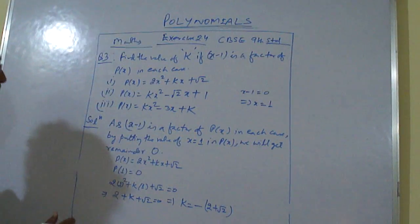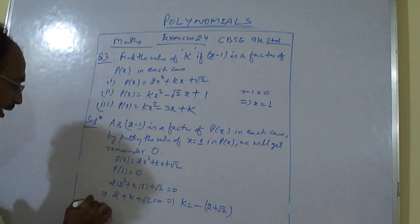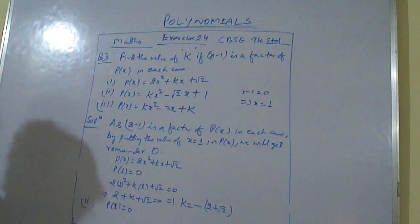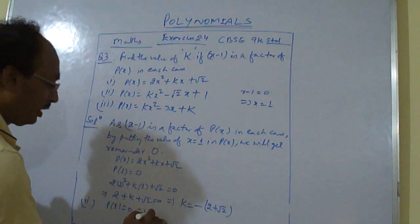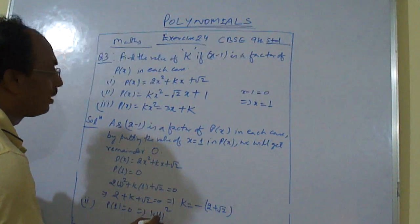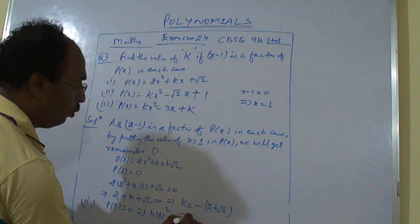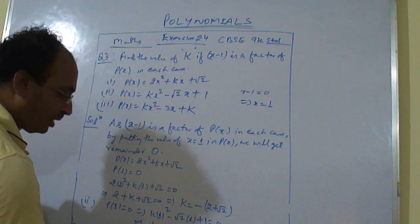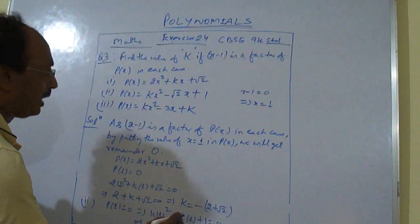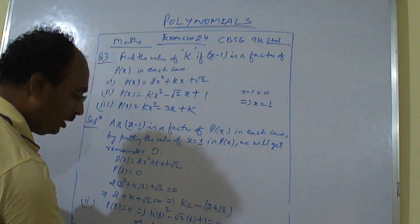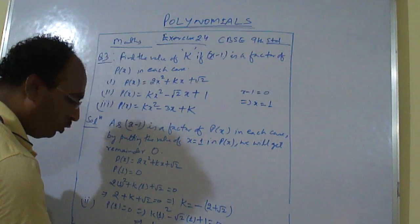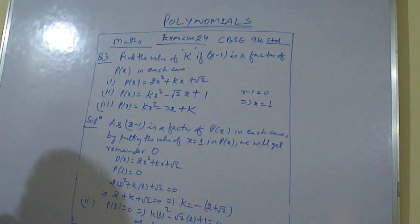Similarly, the second one we will solve. Again the second one is given p(1) is equal to 0. So p(1): k into 1 square minus root 2 into 1 plus 1 is equal to 0. This gives k plus 1 minus root 2 is equal to 0, which further gives k is equal to root 2 minus 1. So in this case k is equal to root 2 minus 1.